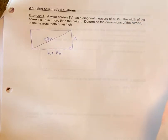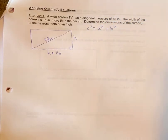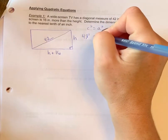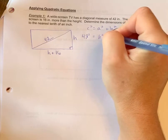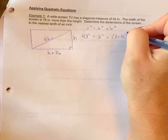So we can use Pythagoras theorem to help us. c squared is equal to a squared plus b squared because it allows us to get an equation. We need an equation if we're going to solve for our variables. So we're putting in 42 squared equals h squared plus h plus 16 squared, so that needs to be in brackets.